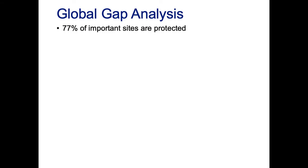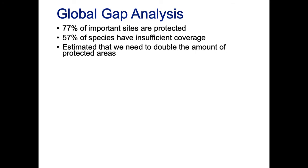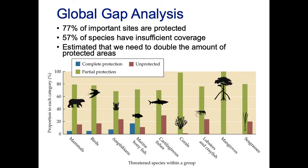A global gap analysis found that 77% of important sites are protected, but 57% of species have insufficient coverage, and researchers estimated that we need to double the amount of protected areas. Looking at threatened species across different taxonomic groups, the data show the proportion that are totally unprotected, partially protected, and completely protected. Some mammals, birds, amphibians, and marine bony fish are completely protected, but there is no complete protection for any threatened cartilaginous fish, corals, lobsters, crayfish, mangroves, or seagrasses — and large proportions of these are completely unprotected. This highlights where new protected areas are most needed to prevent the loss of important biodiversity.